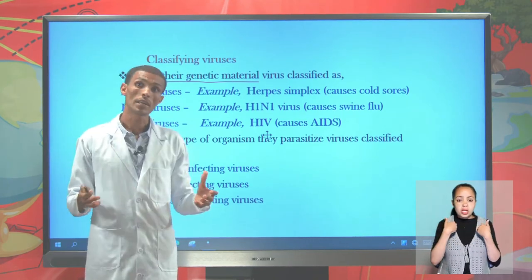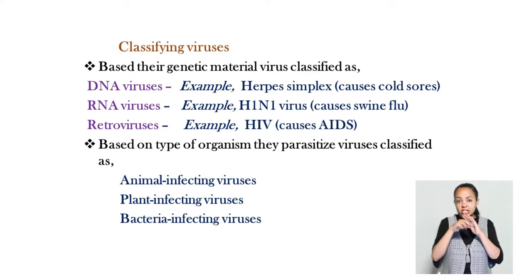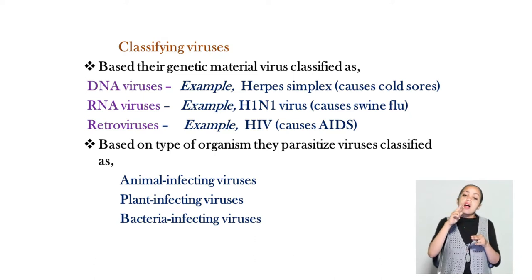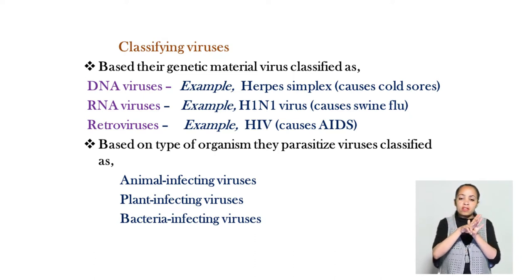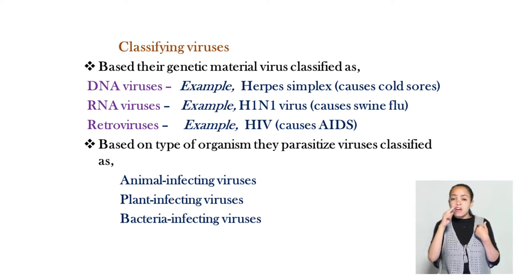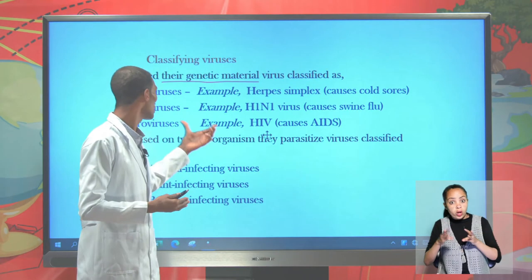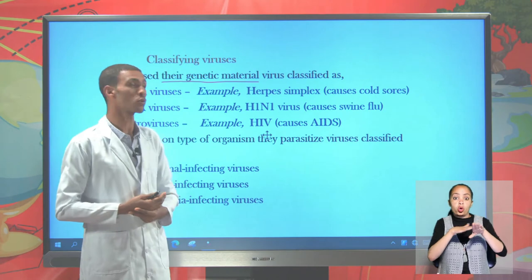If they contain RNA as genetic material, we call them RNA viruses. They express this RNA into viral protein directly. And if they contain RNA but express it in a different way, we call it a retrovirus.